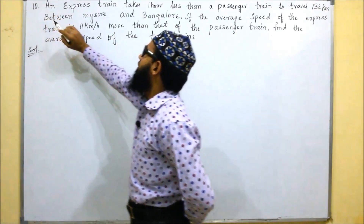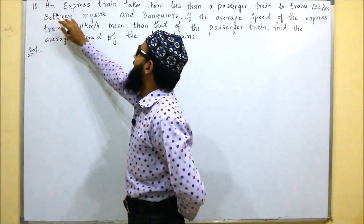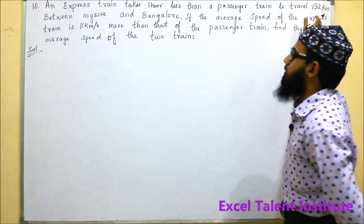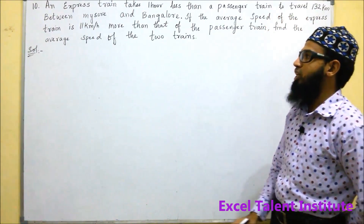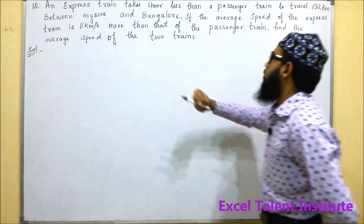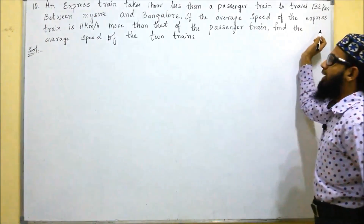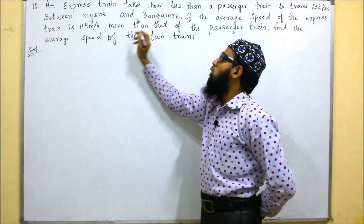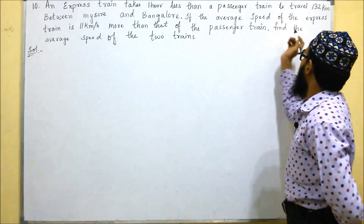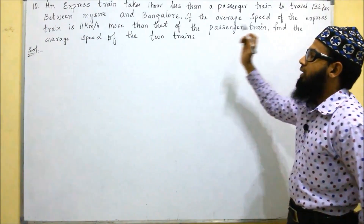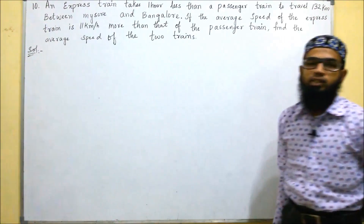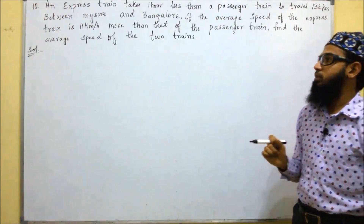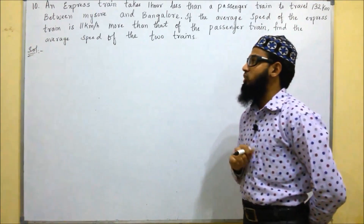This is the 10th problem. An express train takes one hour less than a passenger train to travel 132 km between Mysore and Bangalore. If the average speed of the express train is 11 km per hour more than that of the passenger train, find the average speed of the two trains. We don't know the speed of the express train and passenger train.